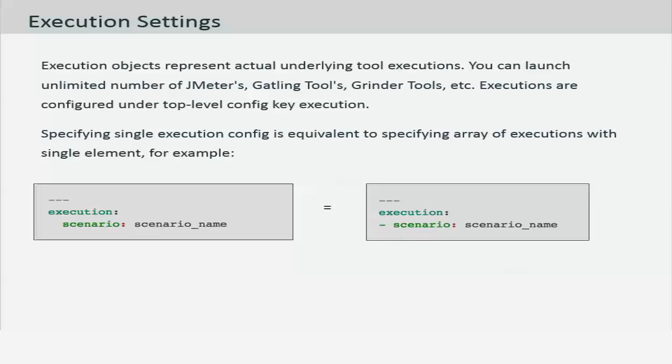If you see the first example, the first example on the screen is using a dictionary for the execution settings by making a key value pair for scenario, whereas the second one is actually using the symbol dash which actually means it's building a list of elements for multiple executions.